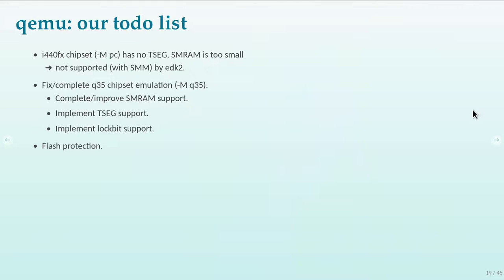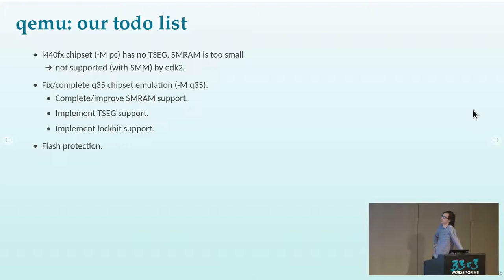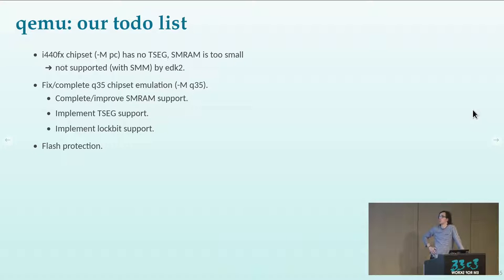Our to-do list: QEMU can emulate two different chipsets. The older one is from the mid-90s and doesn't have TSEC memory, so we can't use it for secure boot — the EDK2 implementation needs more memory than fits in SMRAM. The newer Q35 chipset emulation, selected with dash-M Q35, already had some basic SMRAM support. We need to complete it: implement TSEC, implement the lock bit support, and figure out how to protect the virtual flash.